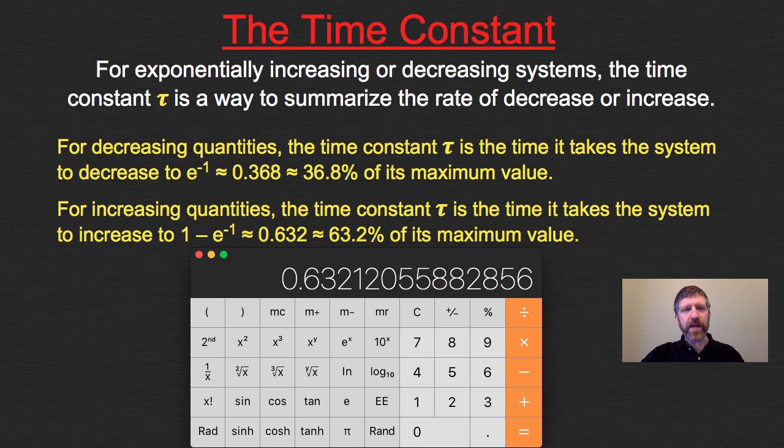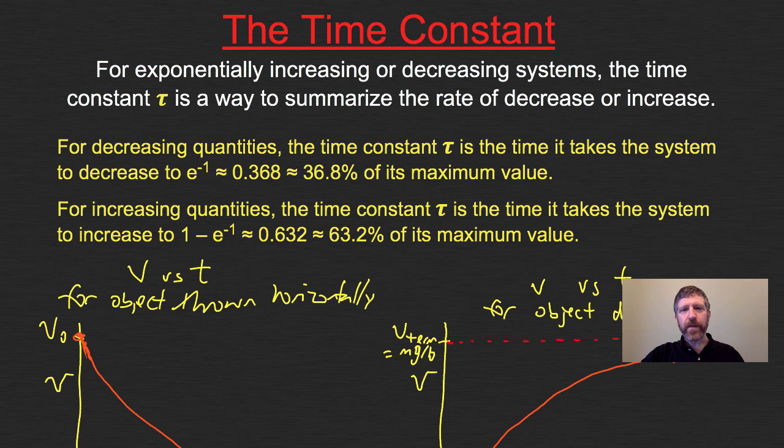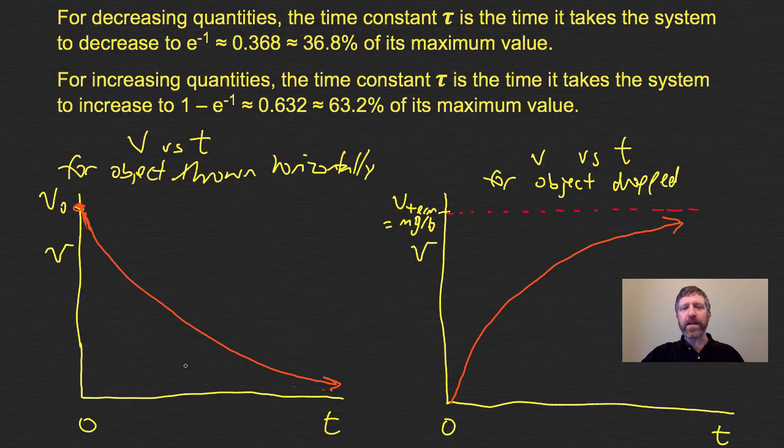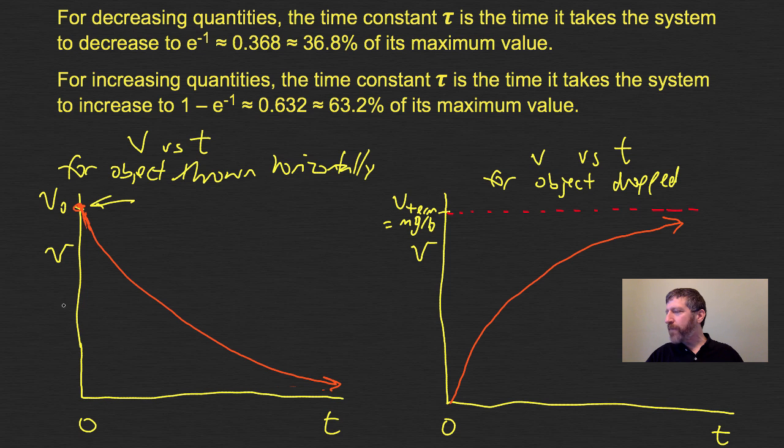Let's take a look at this on a graph. For decreasing quantities like this first one, the time constant is how much time it takes to get to 36.8% of its maximum value. It starts at V0, its maximum value. This point here is approximately 0.368 of V0, the initial velocity. The time it takes to get to that point is what we call the time constant tau.